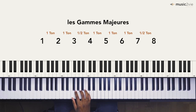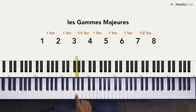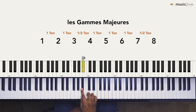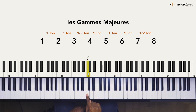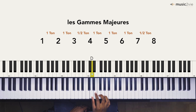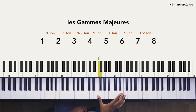Toujours dans le même schéma, au niveau de la gamme de Fa : le premier degré est le Fa, le deuxième degré est le Sol, le troisième degré est le La, le quatrième degré est le Si bémol ou La dièse, le cinquième degré est le Do, le sixième degré est le Ré, le septième degré est le Mi. On revient sur l'octave avec le Fa.